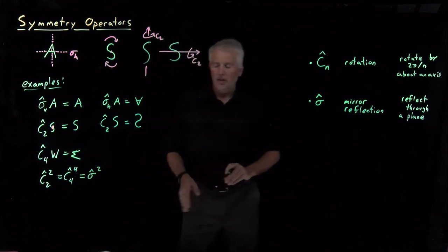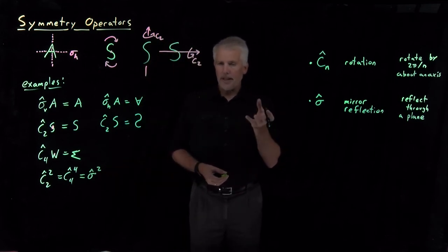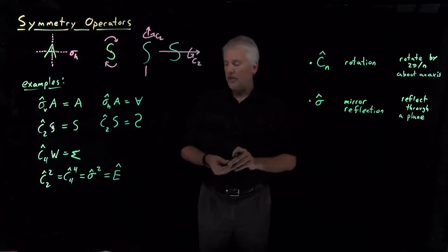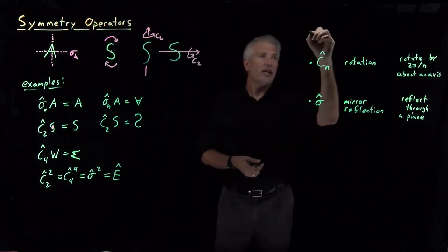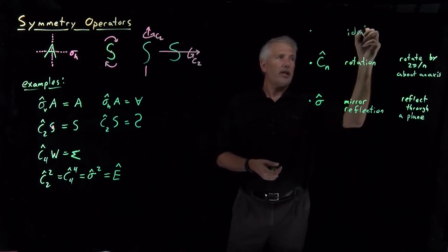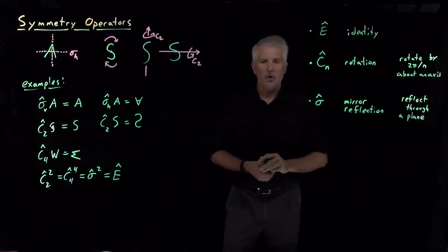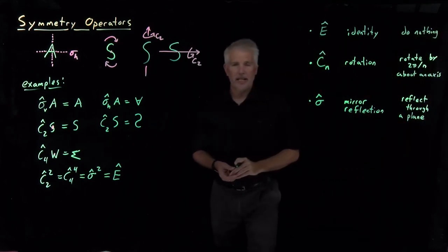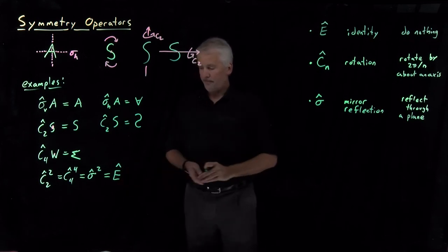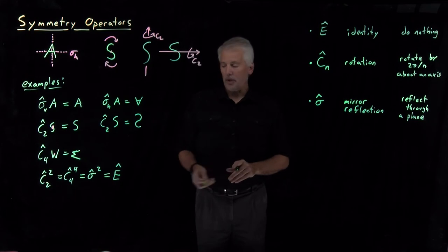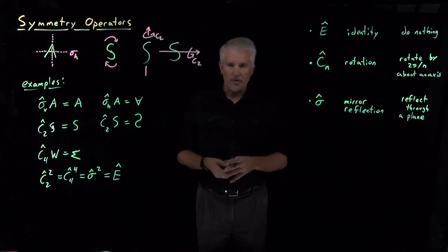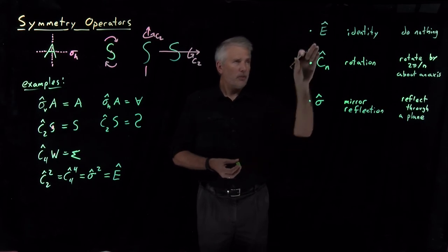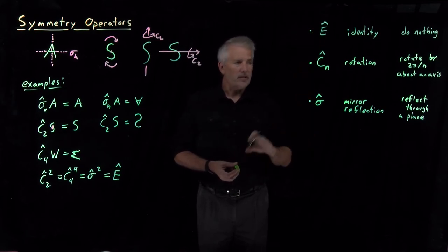All these symmetry operations, if you keep doing them over and over, eventually get you back to where you started. We give a name to the operation of doing nothing — taking a molecule from its configuration to the exact same configuration. That's called the identity operation, and we give it the letter E. The E operator does nothing to an object: operating with the identity on a letter or a molecule always gives back the same object in the exact same orientation.